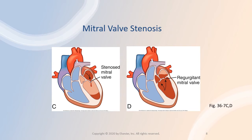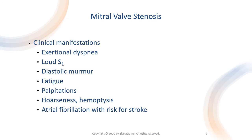Severe mitral annular calcification is another cause in the aging population. These deformities block blood flow and create a pressure difference between the left atrium and the left ventricle during diastole, resulting in higher left atrial and pulmonary vascular pressure. The overloaded left atrium places the patient at risk for atrial fibrillation. In chronic mitral stenosis, pressure overload occurs in the left atrium, the pulmonary bed, and the right ventricle.